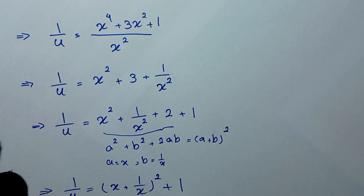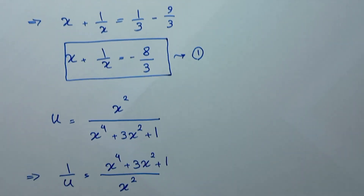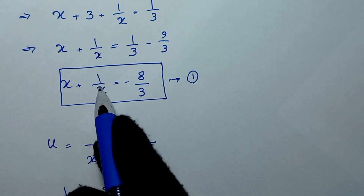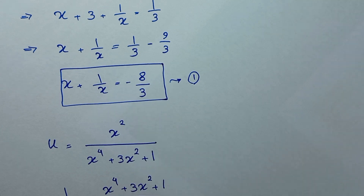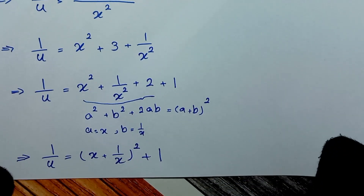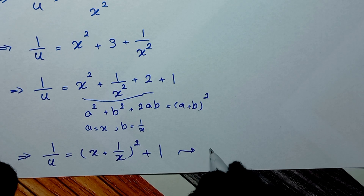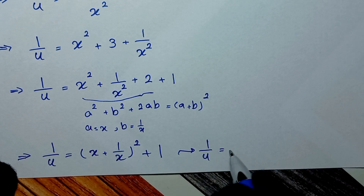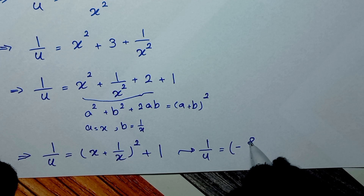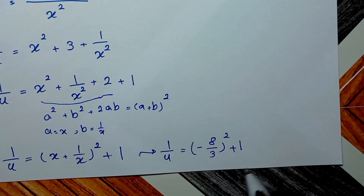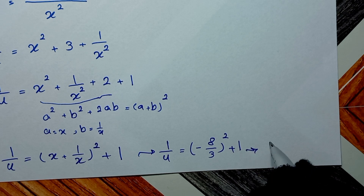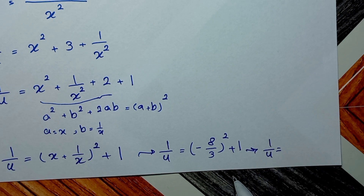From Equation 1, x plus 1 over x is negative 8 over 3. So we substitute: 1 over u is equal to negative 8 over 3, squared, plus 1.